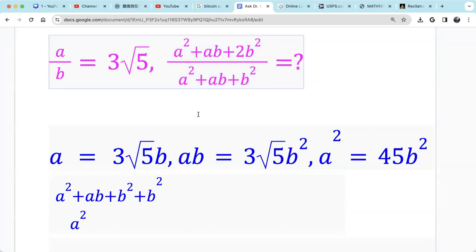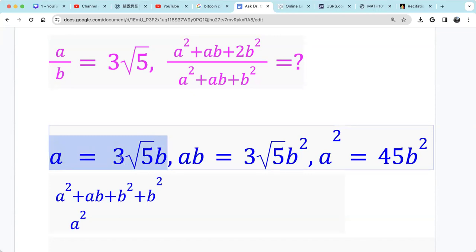So what do we do? First, you see we have A squared, we have B squared, we have AB. So let's just calculate that. We can write A over B as A equals 3 radical 5B. So that's the relationship between those two.